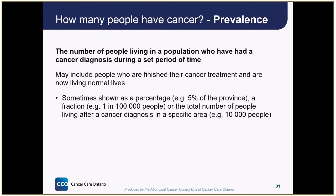Prevalence is the number of people living in a population who have had a cancer diagnosis during a set period of time. Prevalence includes a lot of people who are at very different stages of their cancer journey. Some have been told very recently that they have cancer and are starting their treatments, while others are years past their diagnosis and are now living normal lives other than having regular medical follow-up.